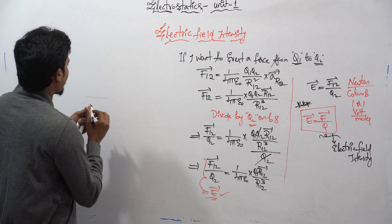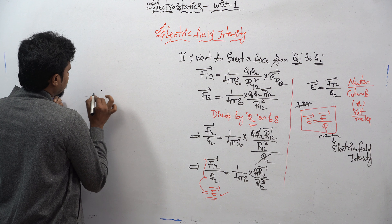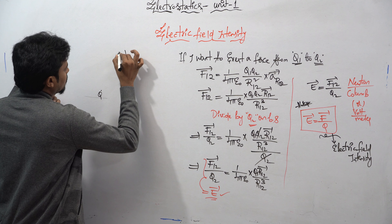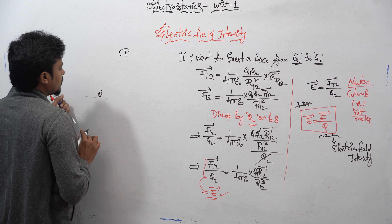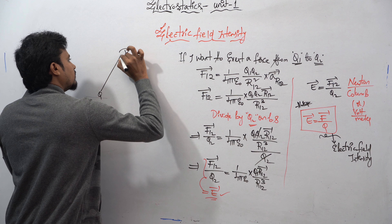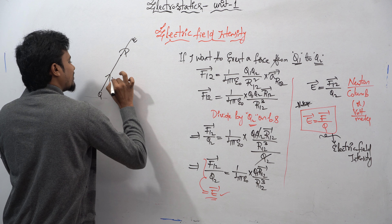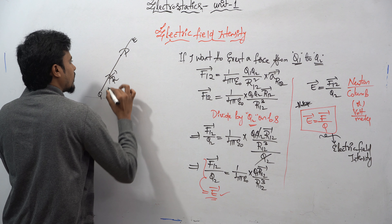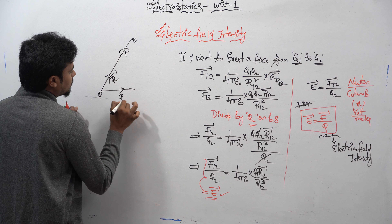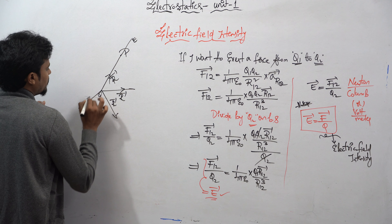Now, if I take a charge q at the origin and a point p in space at some radius r bar, the electric field will radiate outward from the charge. For any point at the same radius r bar, the electric field direction remains consistent.